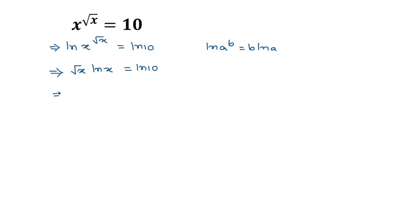Now applying the formula that 'a' can be written as e to the power of ln of a. These are the same, so according to this, square root of x considered as 'a' can be written as e to the power of...